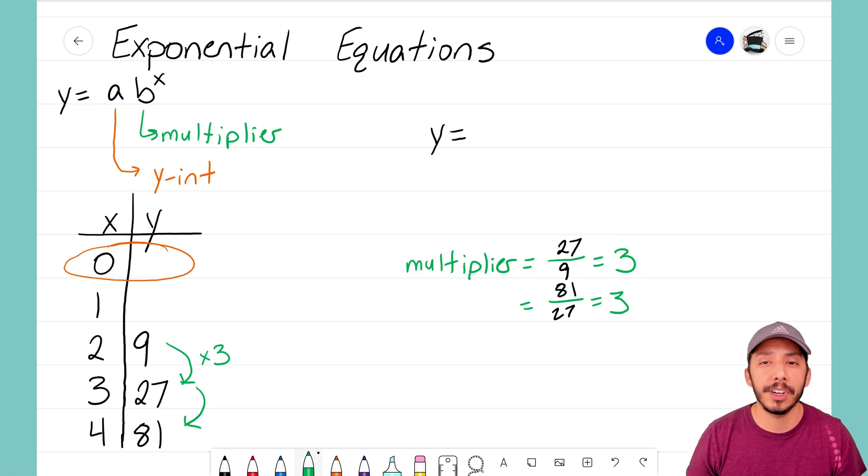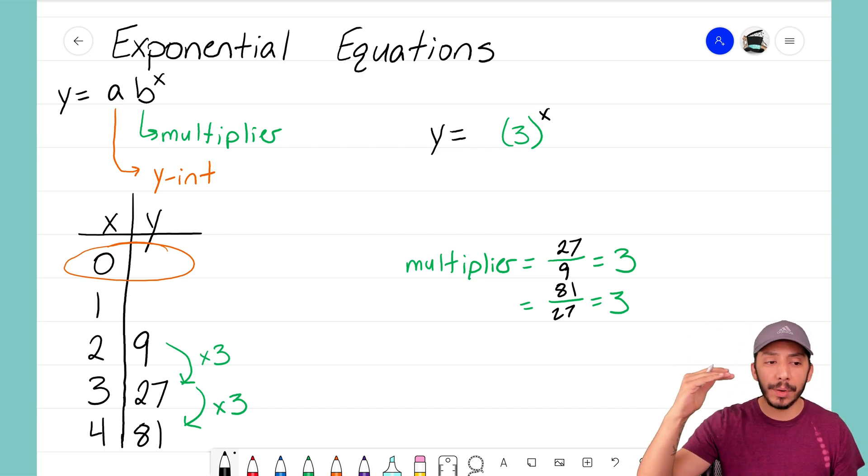So 3 here is definitely the multiplier in our equation. In terms of our equation, I now know that b is going to be 3. That is the number that I'm multiplying by as I move down this table. So we're good, we got the multiplier. The last step is we need to figure out what that zero term is.